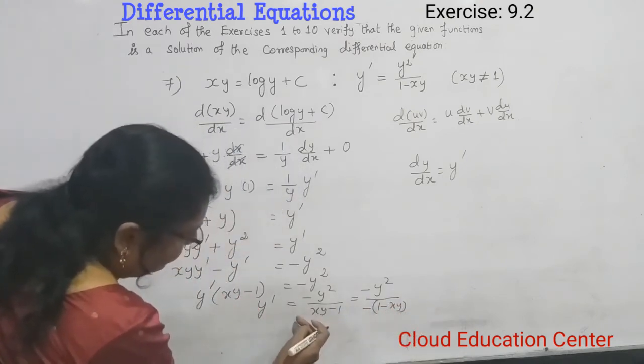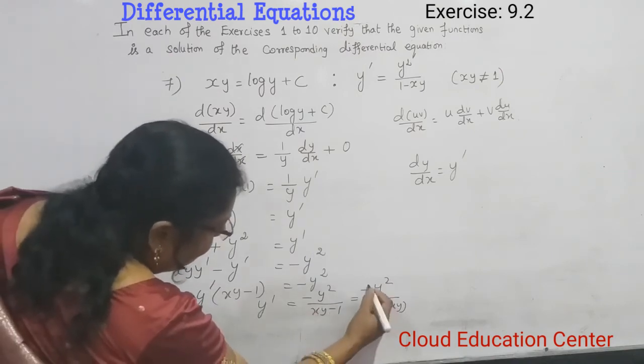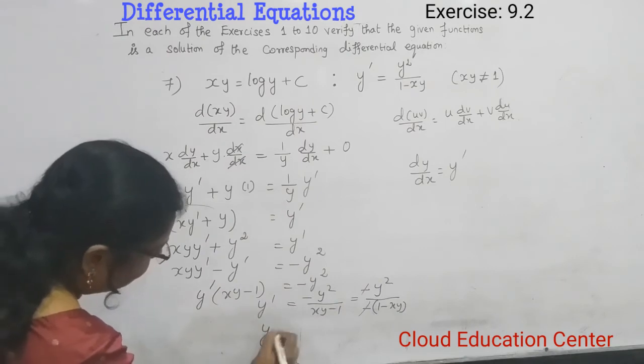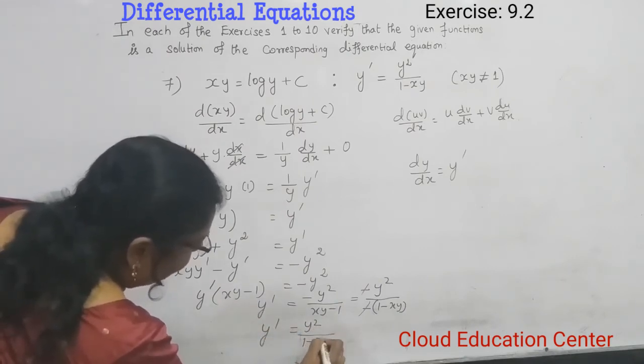When we take out common minus, this will become negative and this will become positive. So both minus, we can cancel. At last, we get y dash equals y square divided by 1 minus xy.